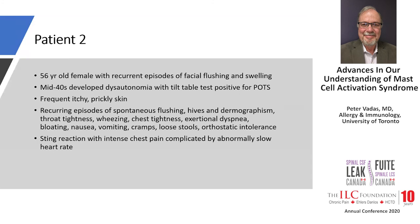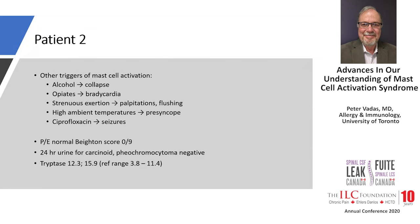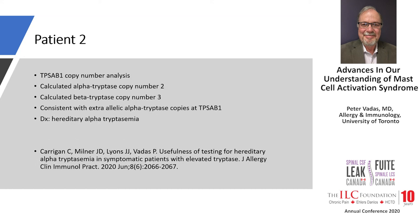Another patient: a 56-year-old with recurring facial flushing and swelling, dysautonomia confirmed on tilt table testing positive for POTS, itchy and prickly skin, recurring flushing, hives, dermographism, throat tightness, wheezing, chest tightness, shortness of breath, bloating, vomiting, cramps, loose stools, orthostatic intolerance, and a severe sting reaction. Known triggers included alcohol, opiates, high temperature, and strenuous activity. Her tryptase level was elevated into the teens; other investigations were negative, and copy number analysis confirmed hereditary alpha-tryptasemia.